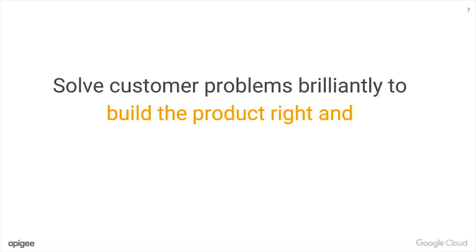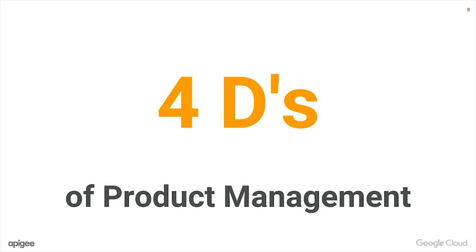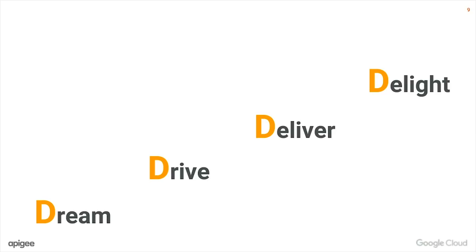So how do I think about product management in terms of a framework? I've come across four Ds of product management as a framework, and I've tried to practice and share this with a lot of my fellow PMs. The four Ds are: dreaming, driving, delivering, and delighting. It really starts with a dream. A lot of the PM's job is to imagine a world of possibilities, imagine the art of possible, imagine how you can make things better for your customers, or solve problems in a way which is almost unreachable to begin with. That imagination requires a little bit of dreaming.